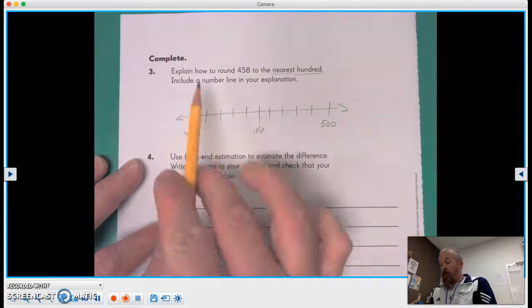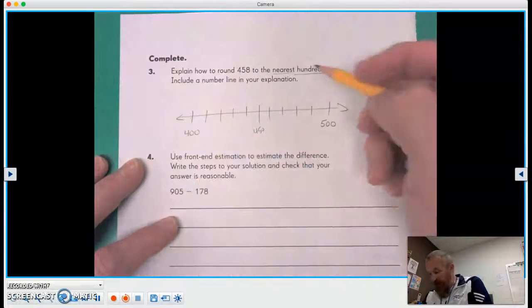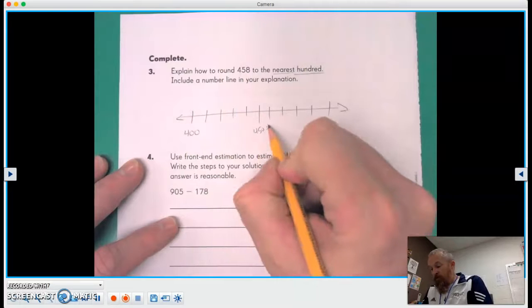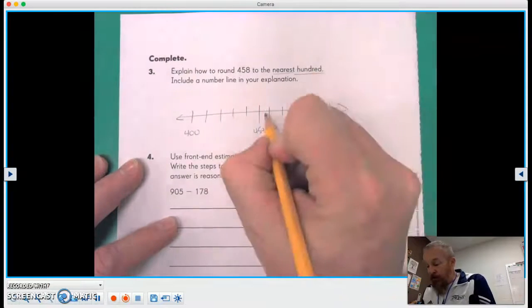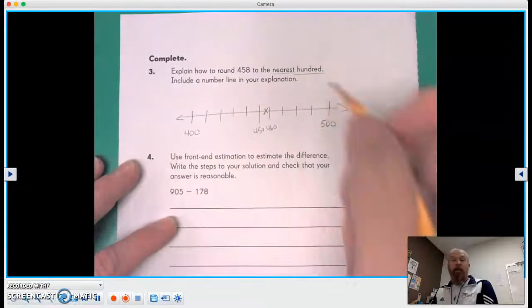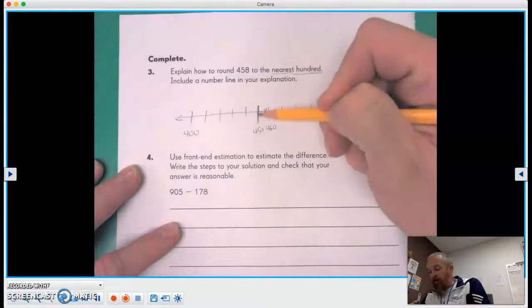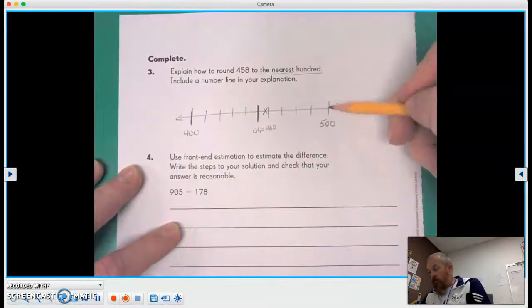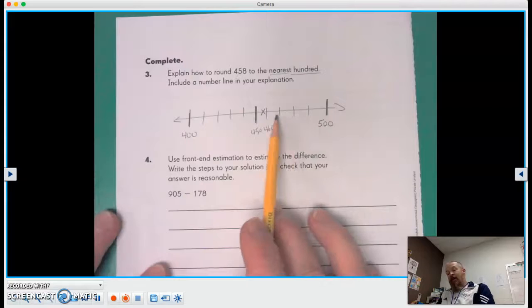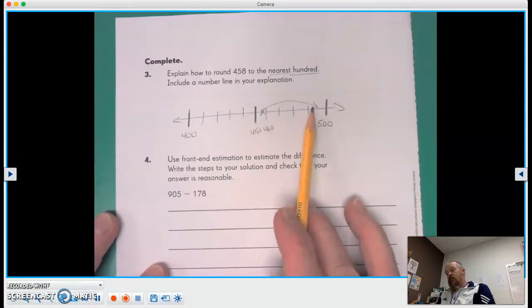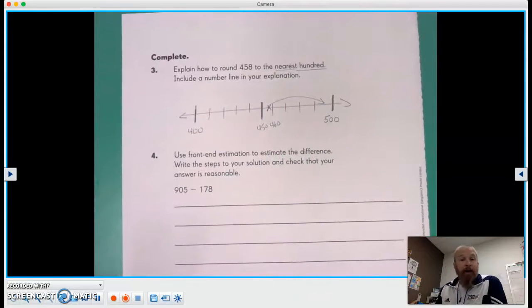And we have the number 458. So there's 450, here's 460. Our number comes between here. And it's 58. So it's gonna be about up in there somewhere. Again, this is our halfway point between the two. So it's closer. It's on this side of that line. So we will be going up to 500.